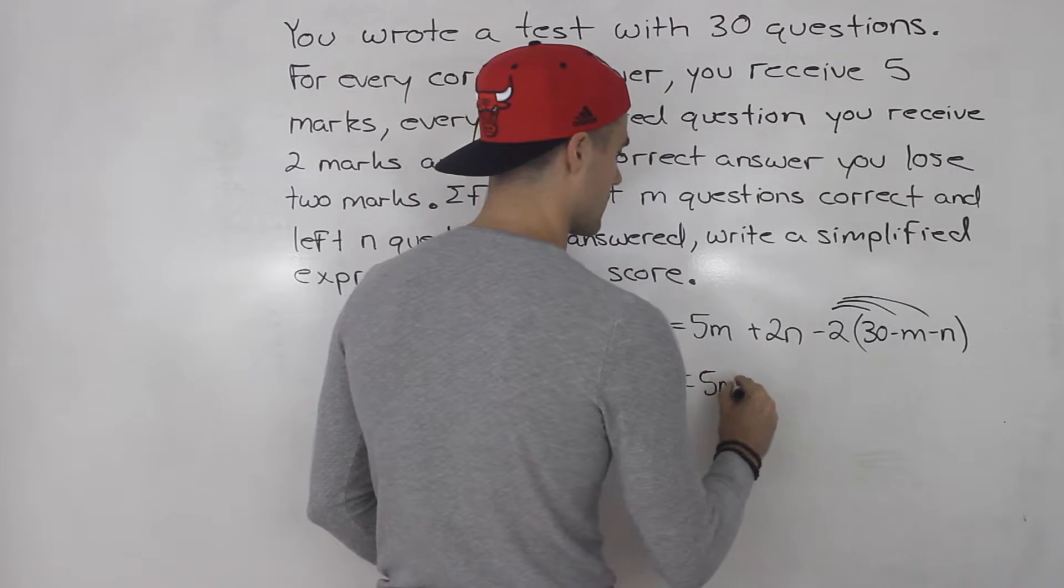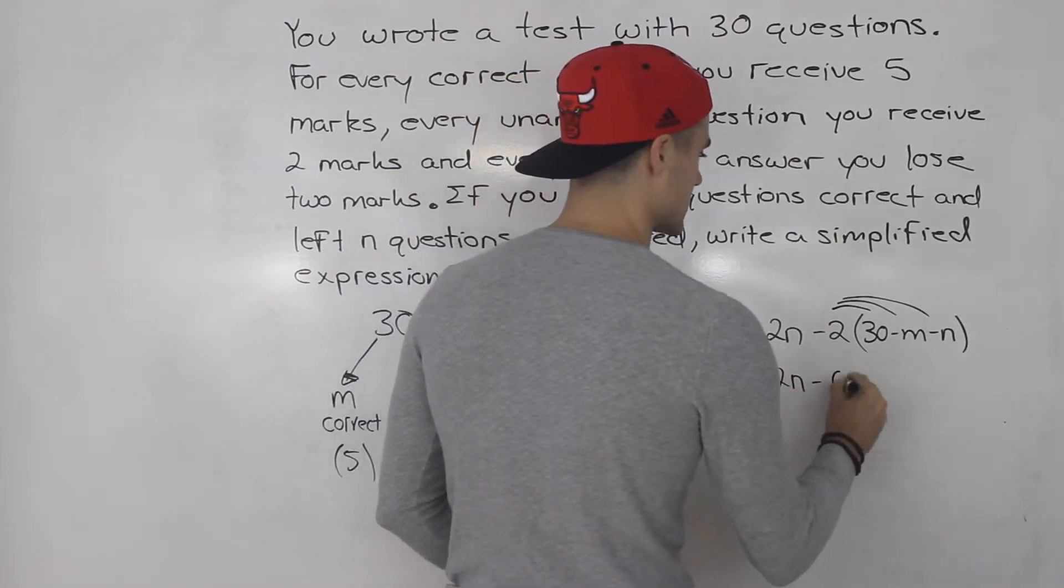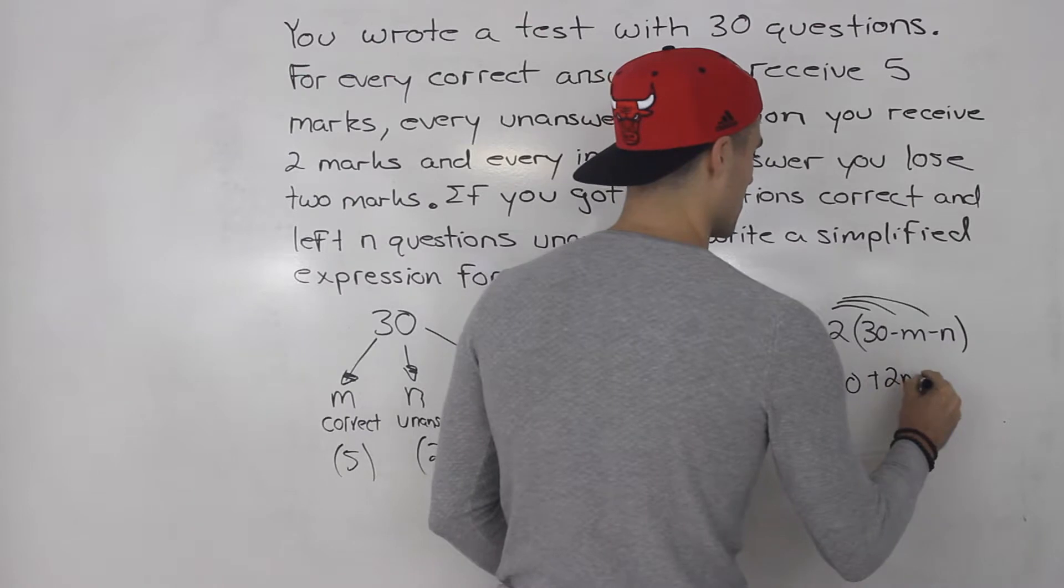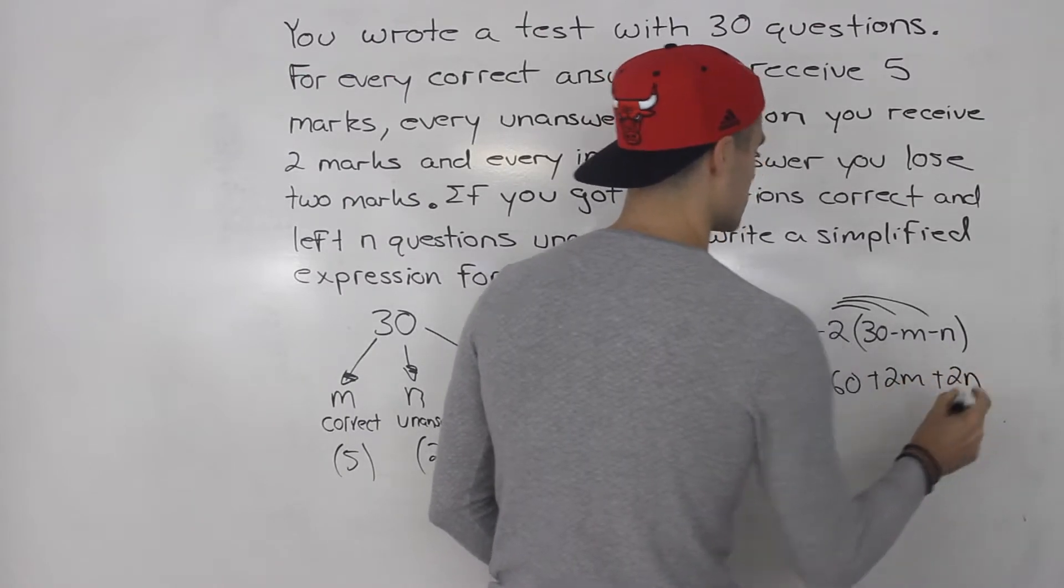So we have 5M plus 2N minus 60 plus 2M plus 2N. We're taking that negative 2 and multiplying it by everything in the bracket.